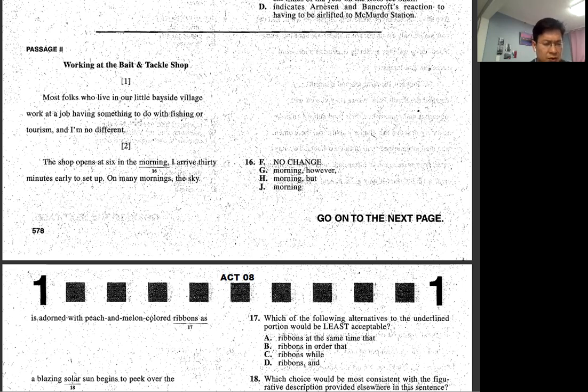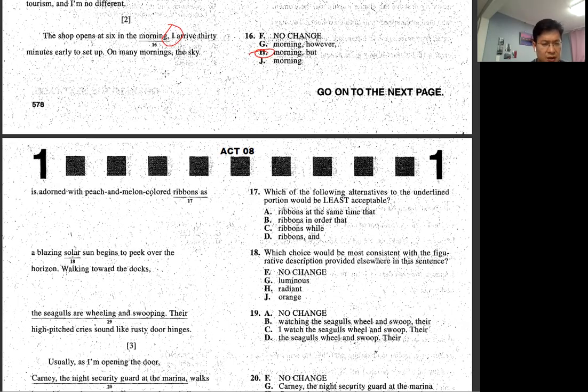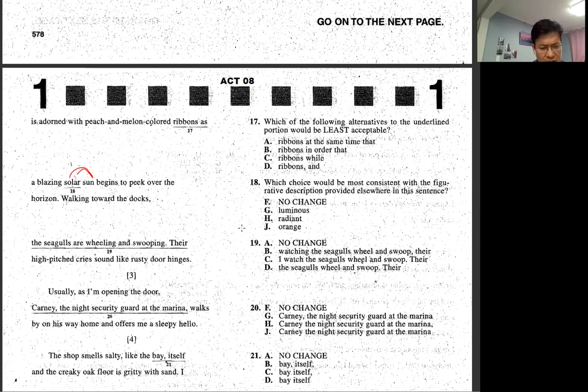Most folks are in this. The shop opens at six in the morning. The shop opens six morning, and then this is comma splice, right? And then you have to put something in the middle. So that's a lot of also spot. And then on many mornings the sky is adorned with a peach and melon colored ribbons as a blazing solar sun. Solar is sun, so solar sun doesn't make sense.